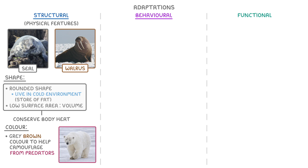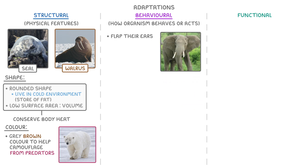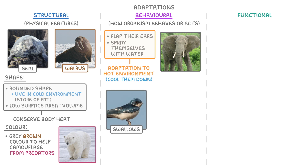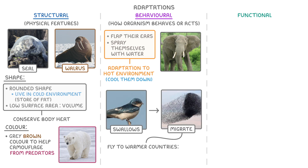Behavioural adaptations are the way an organism behaves or acts. So the fact that elephants flap their ears back and forth and spray themselves with water are behavioural adaptations to the hot environment in which they live, because both of these behaviours are going to help cool them down. Similarly, swallows and some other birds migrate and fly to warmer countries during the winter, which allows them to avoid the cold and lack of food in their summer homes.